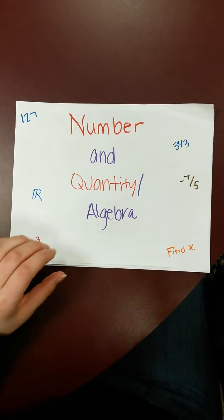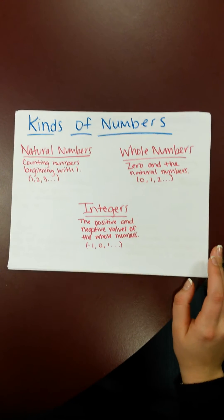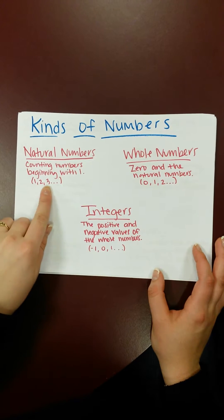We're going to talk about number and quantity in algebra. So first we'll start by the kinds of numbers. We have natural numbers, which is any number starting with 1, so 1, 2, 3.